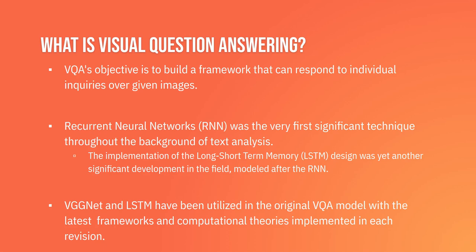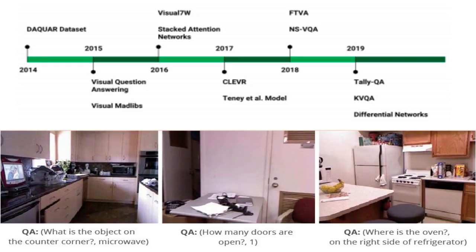More and more frameworks, architectures, and formulations from mathematical perspectives have been introduced and helped the VQA model grow. The timeline shown here illustrates this: in 2014, the DAQUAR dataset was introduced. You can see different models introduced over time — the NS-VQA in 2018, the K-VQA in 2019. Different types of models have been coming out as a result of the original VQA model, and it's been really nice to see breakthroughs continuing to emerge.